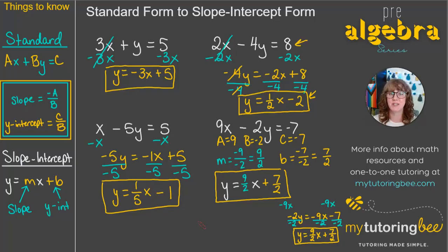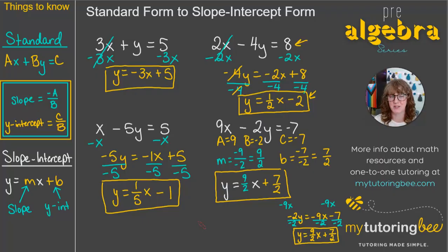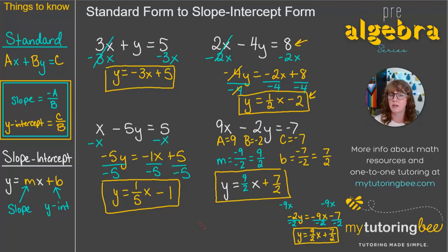And that's how you convert standard form into slope-intercept form. I hope this video was helpful — thank you for watching. Please like and subscribe, and leave a comment to let me know what you thought. I offer online tutoring for grades 2 through high school in algebra, algebra 1, geometry, algebra 2, and statistics. If you need support in those areas, feel free to reach out — my links are in the description below.